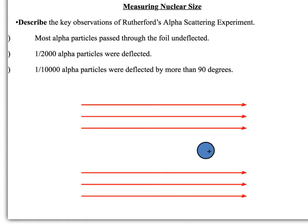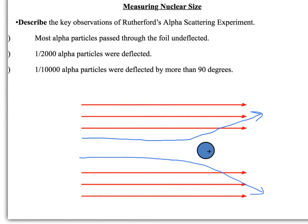The second key observation: about one in 2,000 alpha particles were deflected — these numbers vary between textbooks, but it's around this figure. The third key observation: one in 10,000 were deflected by more than 90 degrees, meaning the particle came in and was bent backwards. The one in 2,000 covers all deflections, while the one in 10,000 refers specifically to those deflected by more than 90 degrees.